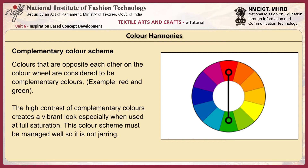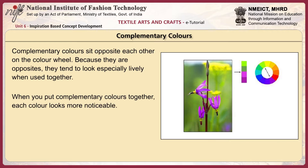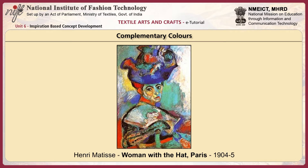Colors that are opposite each other on the color wheel are considered to be complementary colors — for example, red and green. The high contrast of complementary colors creates a vibrant look, especially when used at full saturation. This color scheme must be managed well so it is not jarring. Complementary color schemes are tricky to use in large doses but work well when you want something to stand out, and they are really bad for text. Because they are opposites, they tend to look specially lively when used together, and each color looks more noticeable.